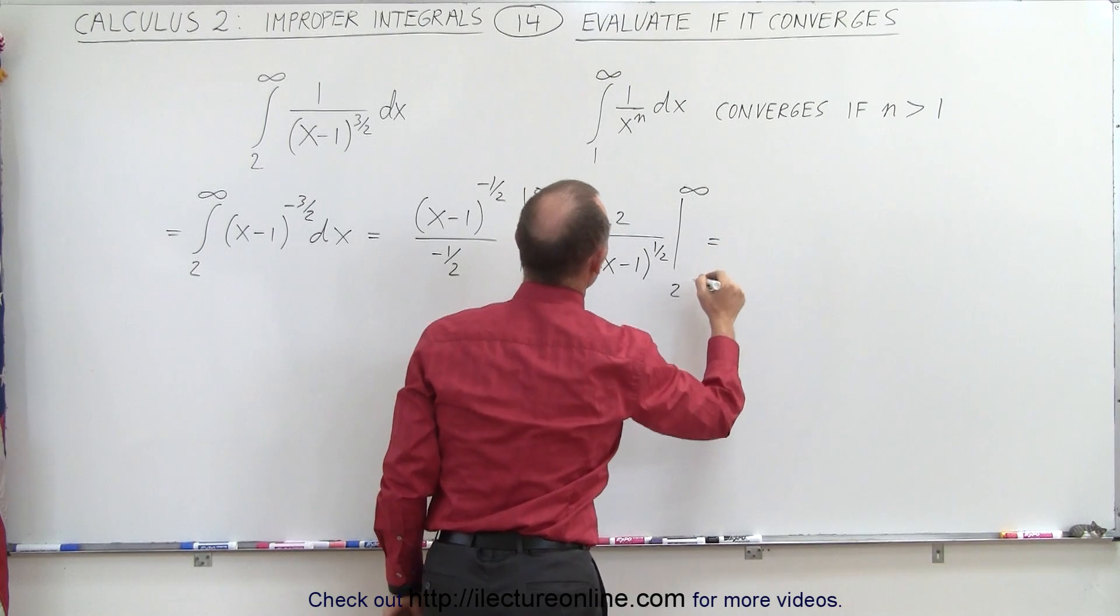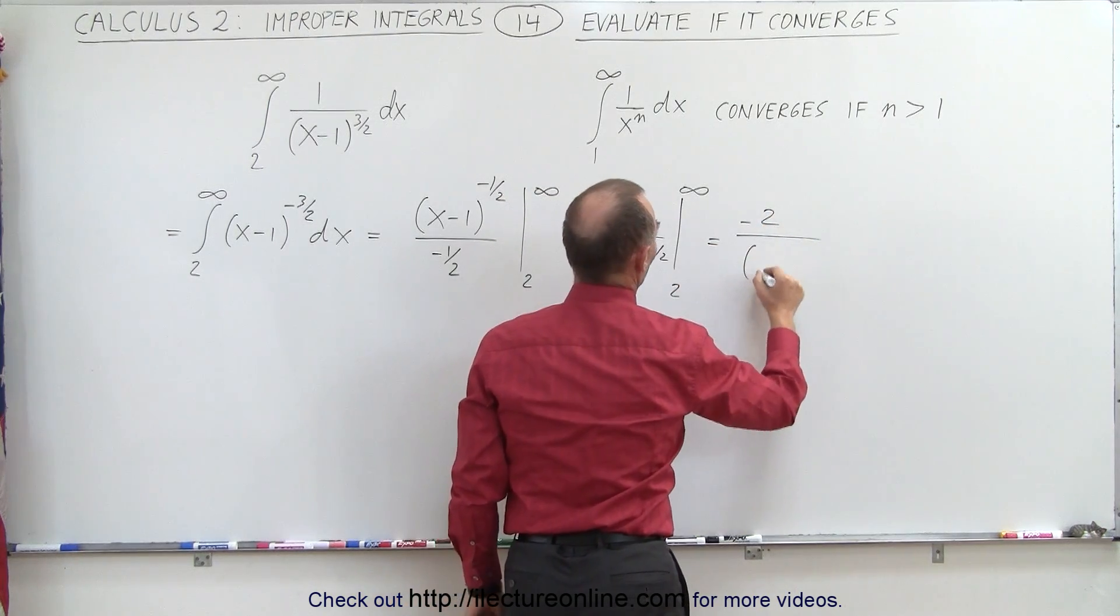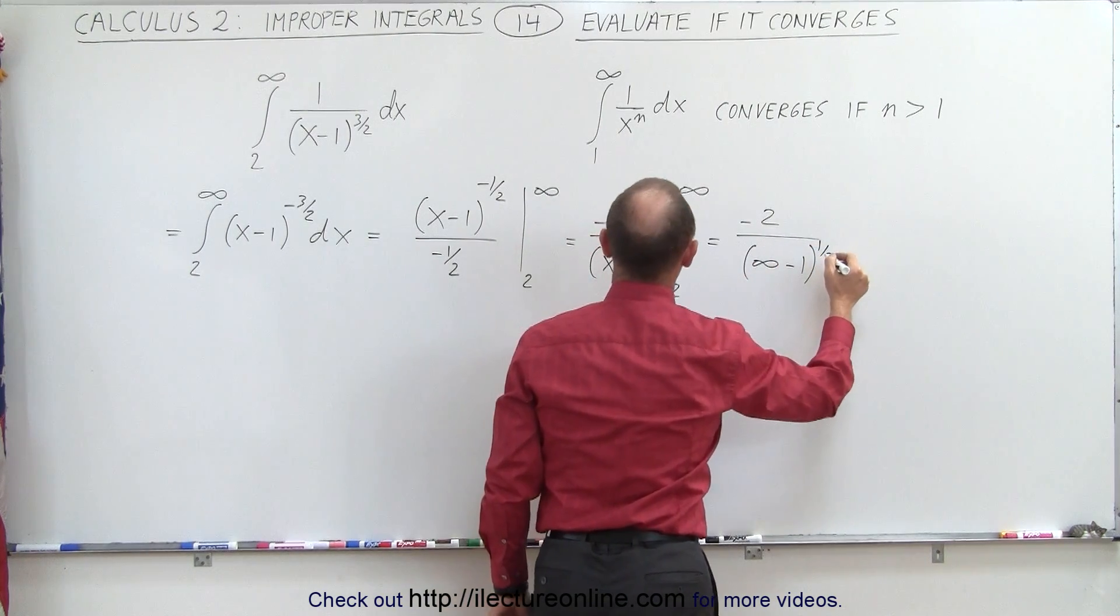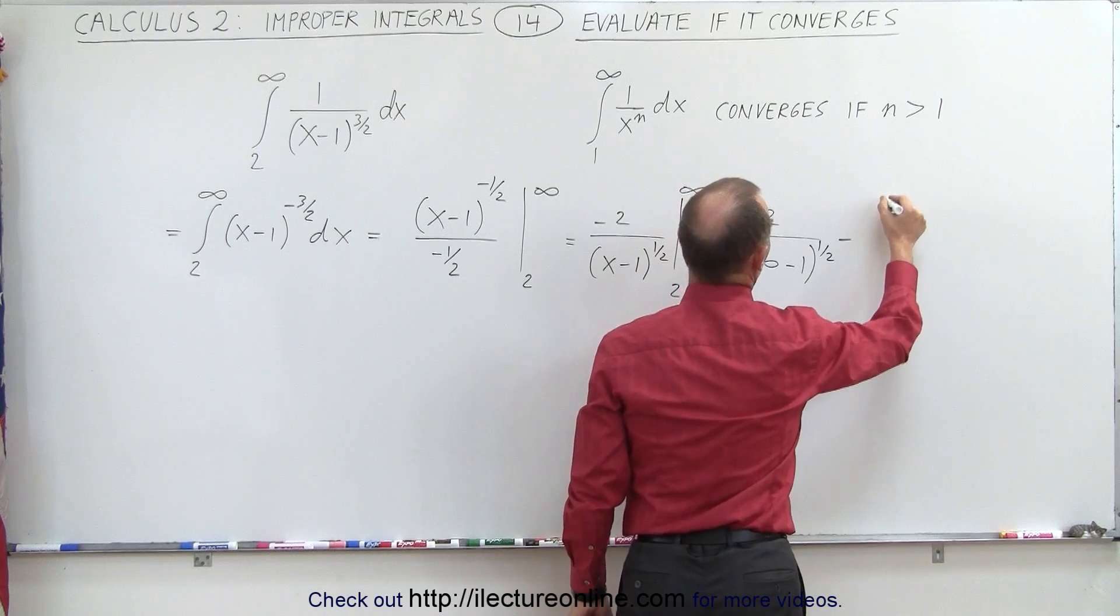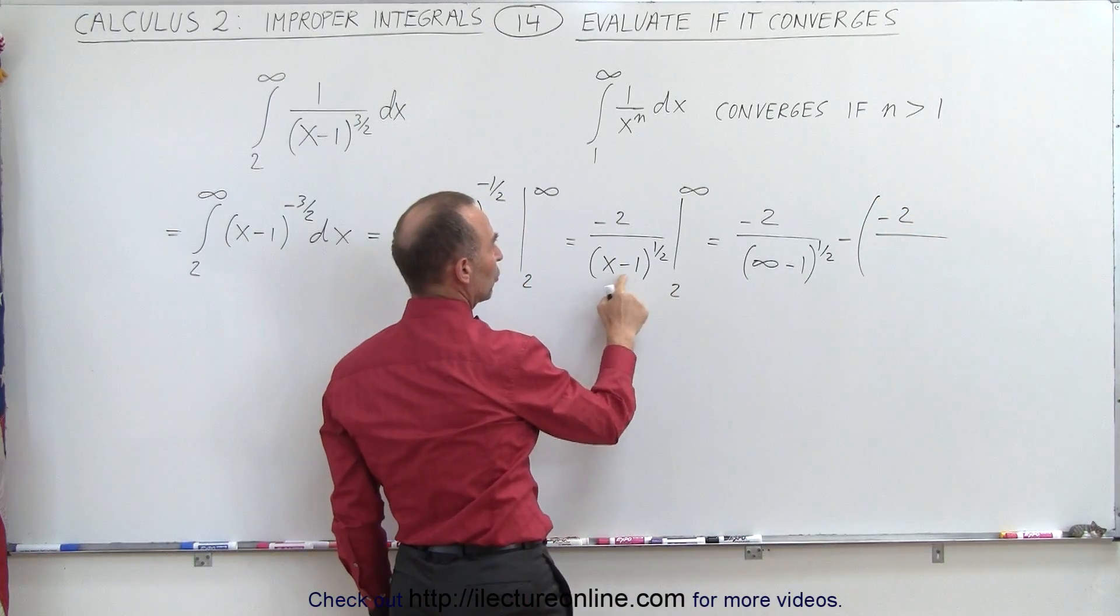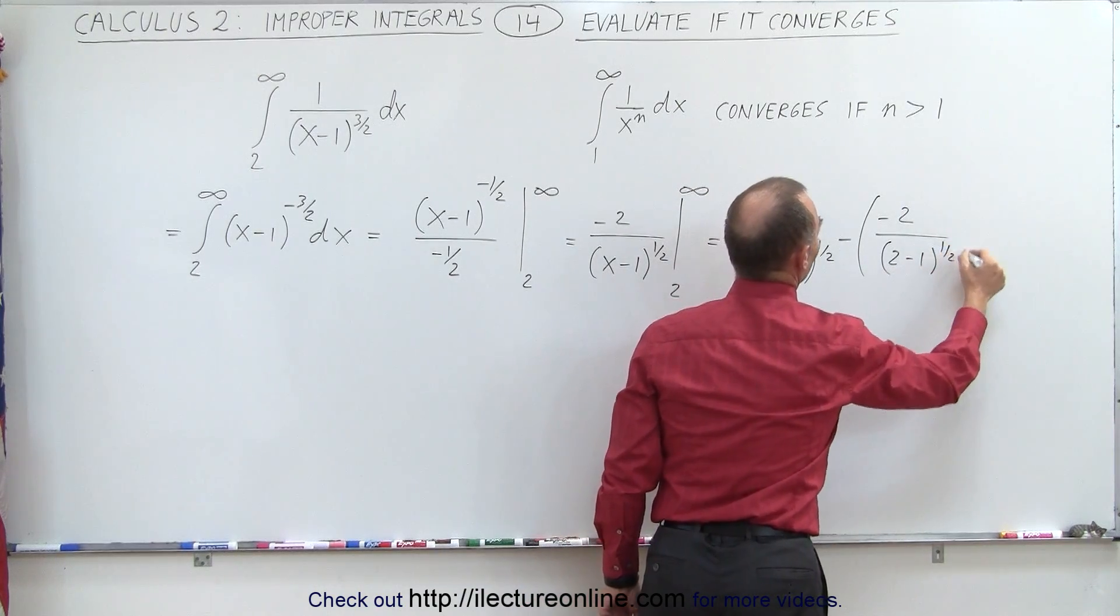When we plug in the upper limit, we get the following: minus 2 divided by the quantity infinity minus 1 to the 1 half power. Subtract from that, minus 2 divided by, when I plug in the lower limit, I get 2 minus 1 to the 1 half power.